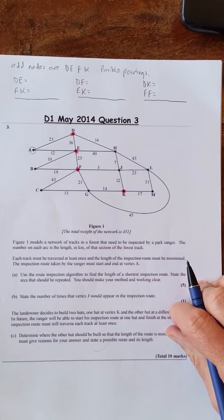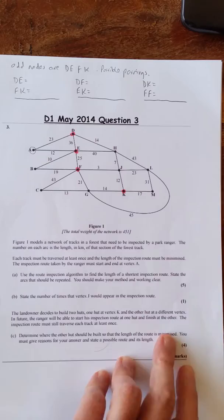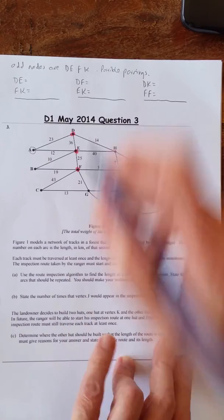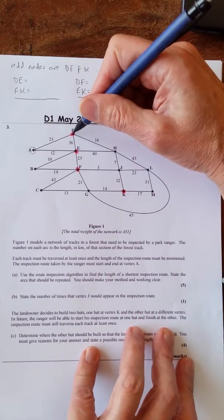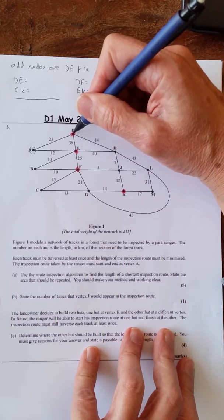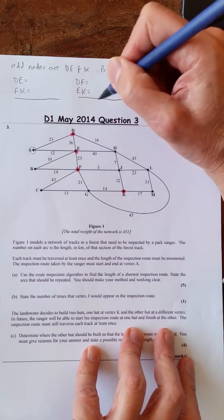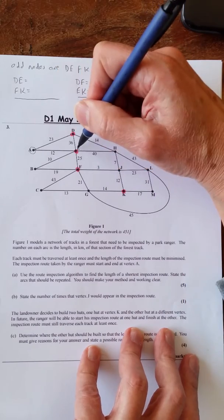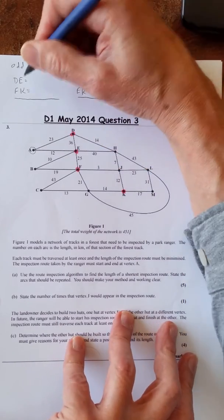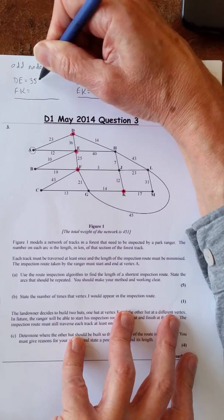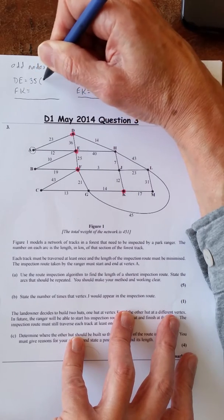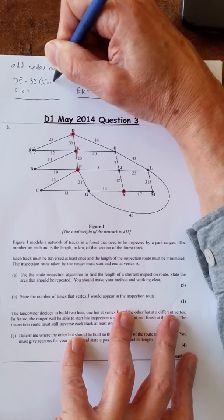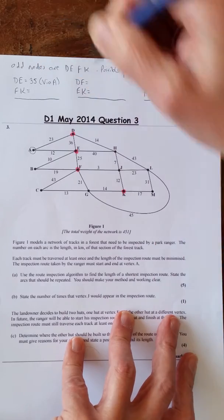And then the last one must be D, K equals. And that means E, F equals. Then we'll get the totals at the bottom each time. We want the shortest distance and you must put the nodes that you're visiting if you're going via somewhere else.